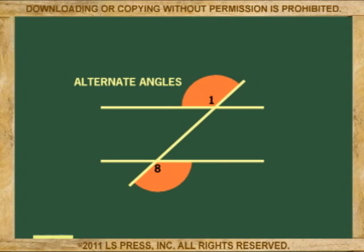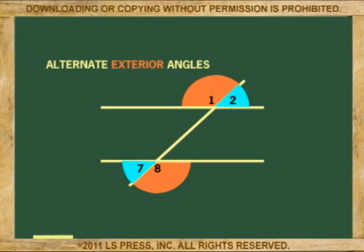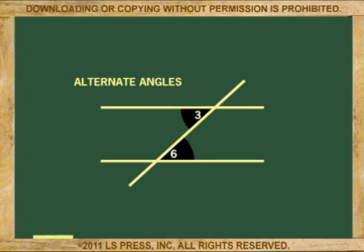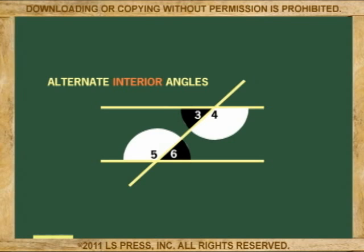Next we'll say that all pairs of alternate angles are equal. Look at angle 1 and angle 8 as a pair, and angle 2 and angle 7 as a pair. They are more specifically alternate exterior angles and they are equal. Also, pairs of angles 3 and 6, and 4 and 5, which are more specifically called alternate interior angles, are also equal.